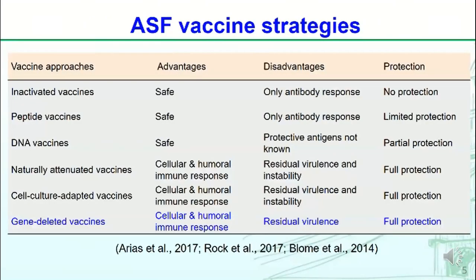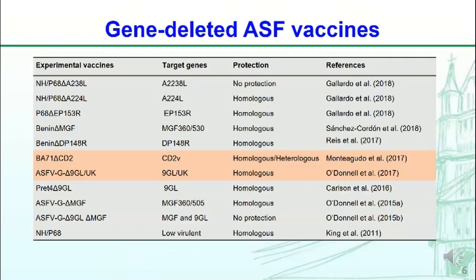To develop ASF vaccines, different strategies have been tried, including inactivated vaccines, peptide vaccines, DNA vaccines, naturally attenuated vaccines, cell culture adapted vaccines, and gene-deleted vaccines. Generally, killed vaccines and subunit vaccines cannot provide protection, or provide limited protection. However, live attenuated vaccines can provide fuller protection, but they have some safety issues. Different genes have been targeted to develop gene-deleted vaccines, including CD2V, UK, and others.